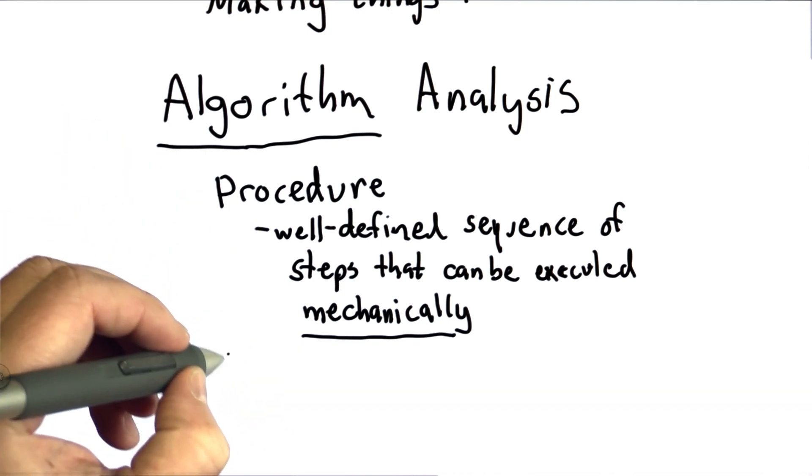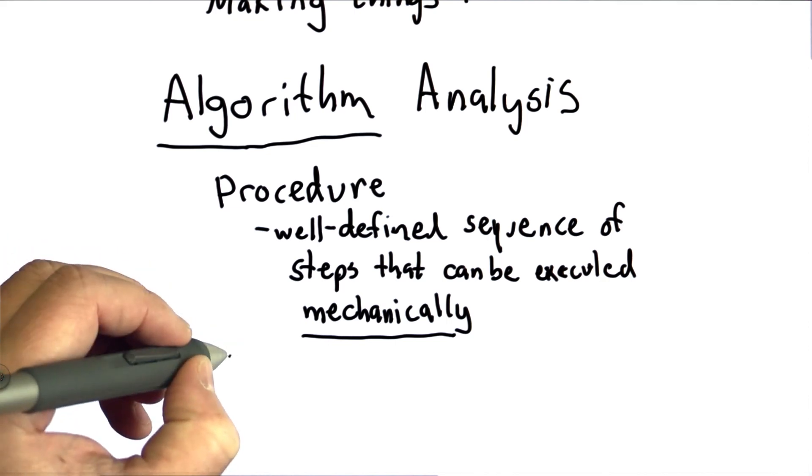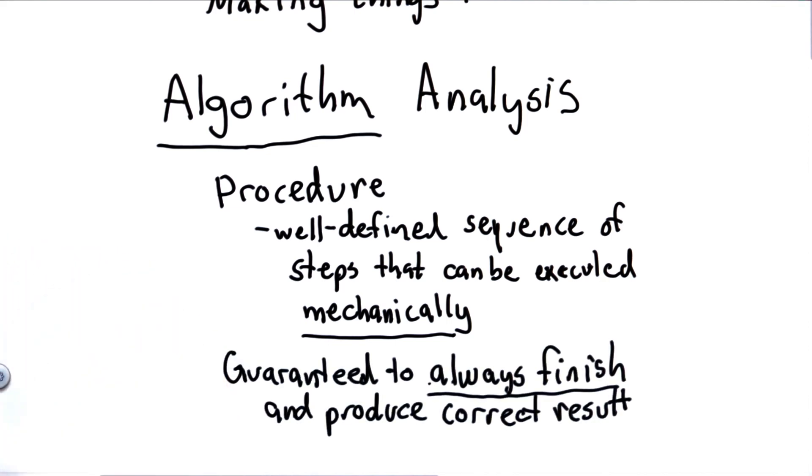To be an algorithm, it has to always finish. And we've pointed out already that this is a very tough problem to figure out whether a program will finish. In general, it's not possible to answer that question. But for many specific programs it is. And in order for a program to be an algorithm, we have to know that it always finishes and it always produces the correct result.